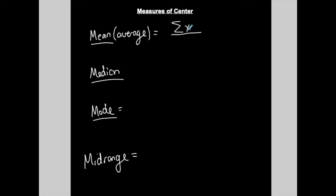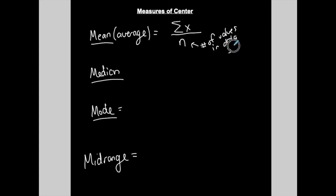X represents each data value. Take the sum of all the data values and divide by n, which is the total number of data values in the data set. Add them all up and divide by the total number — this is what it looks like mathematically. You're going to get used to these types of variables and symbols.